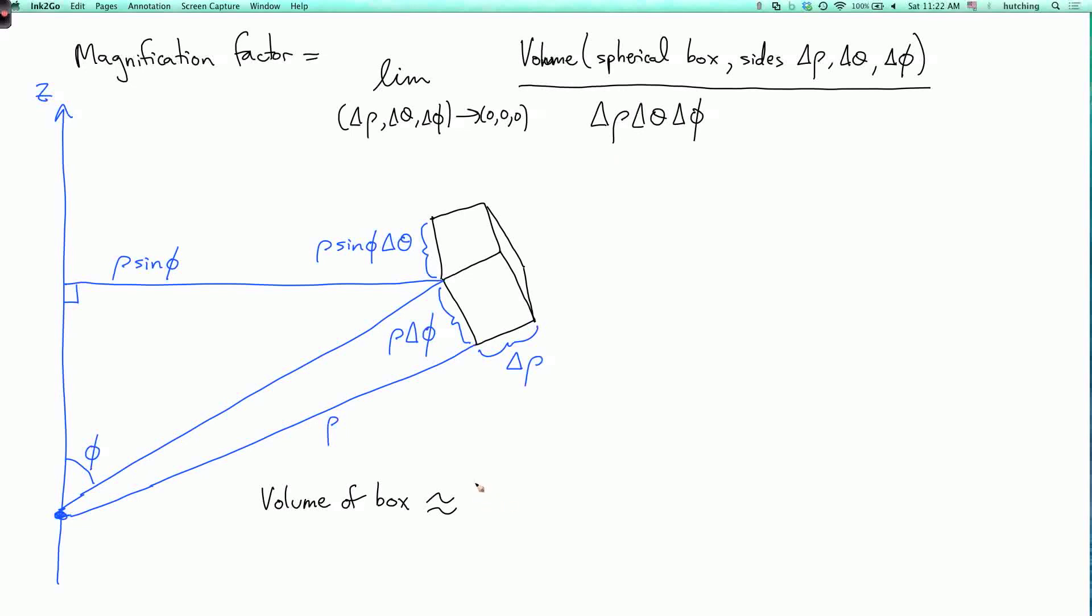So it's approximately delta rho times rho delta phi times rho sine phi delta theta. And when we multiply this out, we see two rhos and a sine phi. So we have rho squared sine phi, and then the product of the deltas. So delta rho, delta phi, delta theta. And when we divide by the product of the deltas, we see our magnification factor.